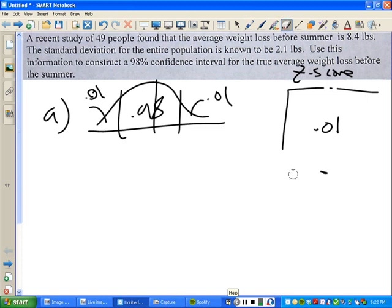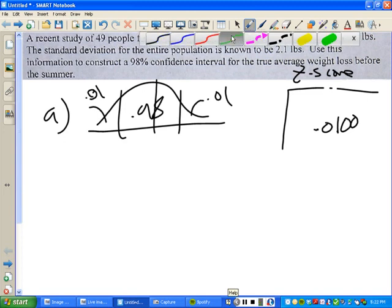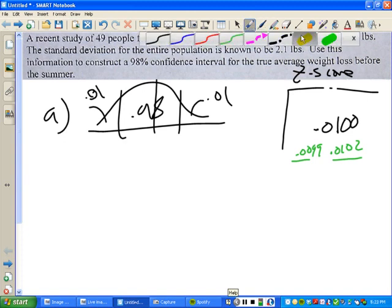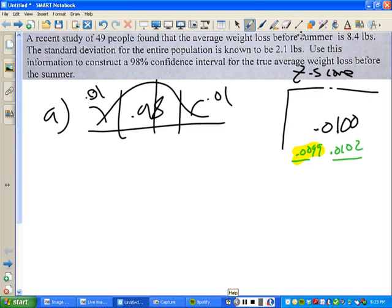You're looking for .01 on the inside part of the chart. So you're looking for .01 on the inside. Now, you're not going to find .0100. I wish you did, but you don't. What you find is .0102 and .0099. Those are the two values you find closest to .01. Now, which one do you use? Well, you always use the one closest to it. So in this case, you're going to use .0099.